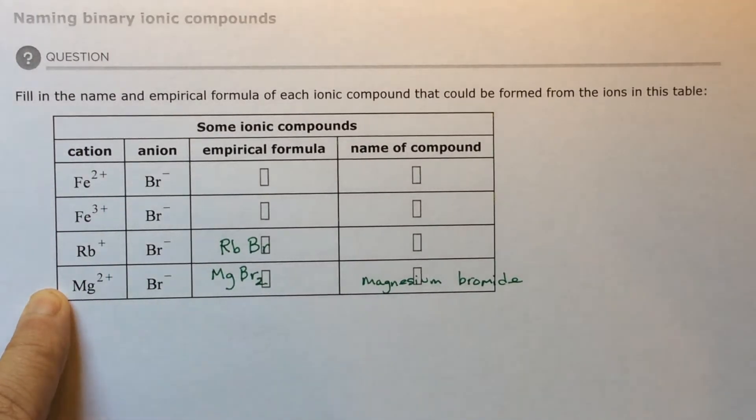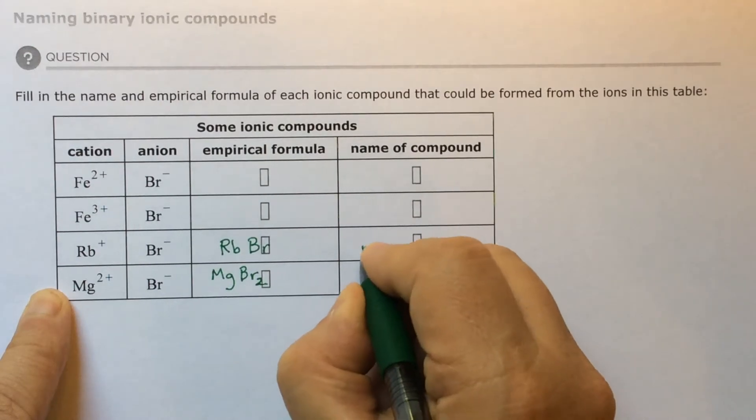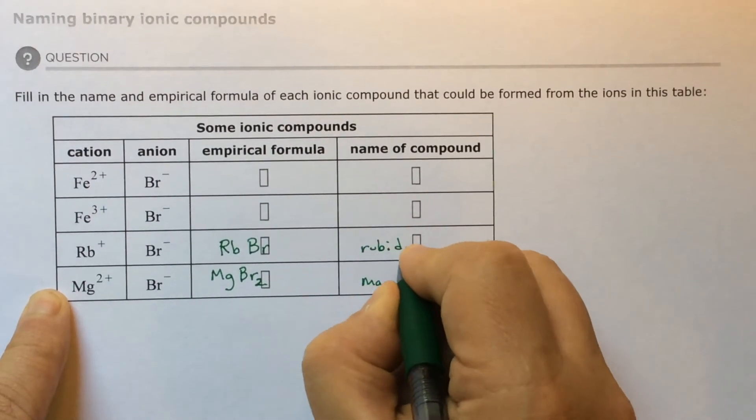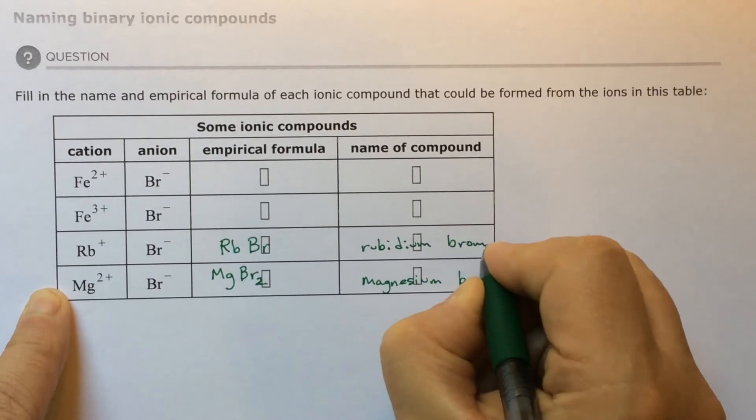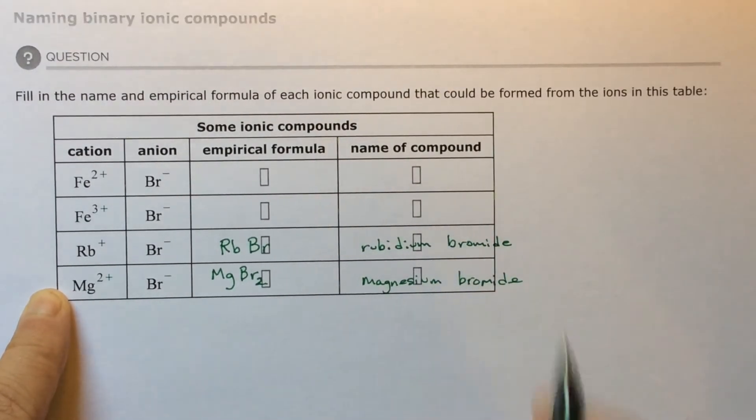Now how do I name it? I simply say rubidium, and then bromine turns to bromide. There's two words here. It's not one word. It's two words, rubidium bromide. The two word name, since it's a binary, binary means two parts.